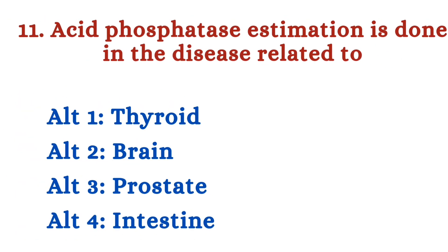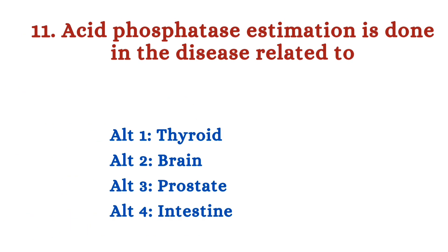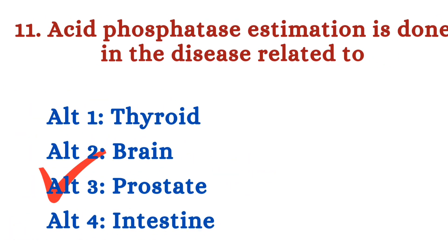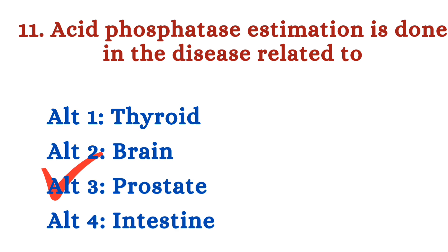Question number 11: Acid phosphatase estimation is done in the disease related to — Option 1: Thyroid. Option 2: Brain. Option 3: Prostate. Option 4: Intestine. The right answer is Option 3 — prostate. Acid phosphatase (ACP) estimation is related to the prostate.